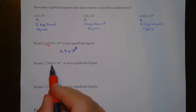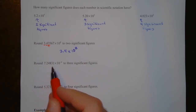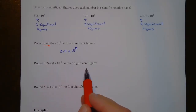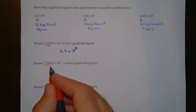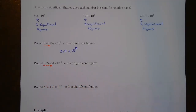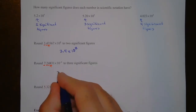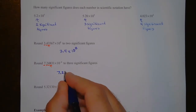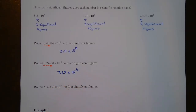This next one is 7.24831 — it has one, two, three, four, five, six significant figures. We want to round to three significant figures: there's my first, my second, my third. I need to look at the fourth digit to determine rounding. Since that's an 8, this 4 becomes a 5, so this becomes 7.25 times 10 to the negative 6.